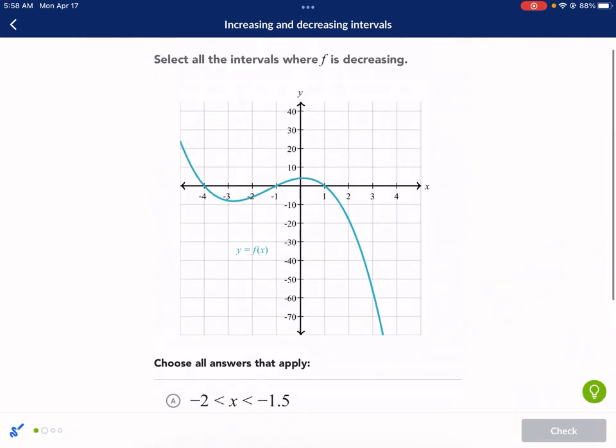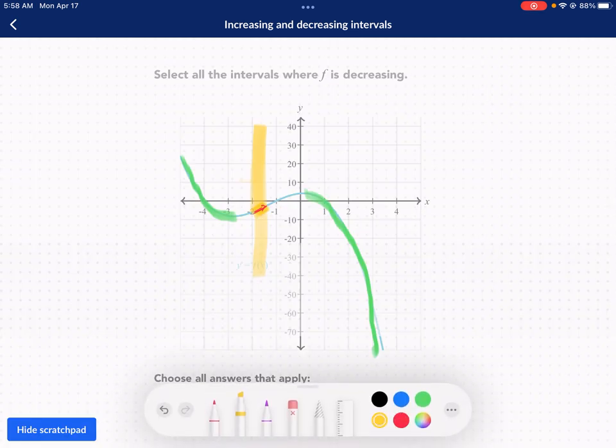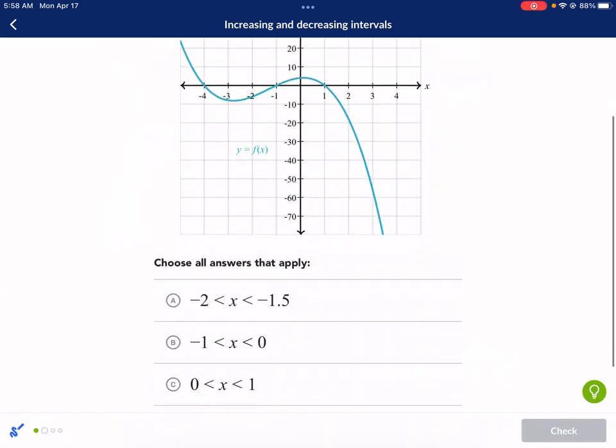What about B? Negative 1 to 0. So negative 1 to 0. We're going to look at a different one. Negative 1 to 0 is right here. That's another increase. So negative 1 to 0 is another increase. That one doesn't work. So we need to check one more.